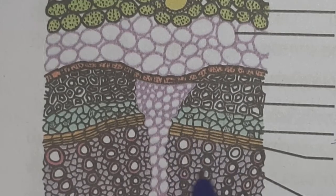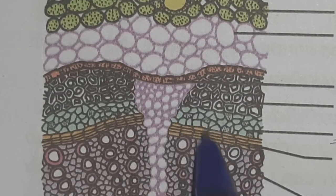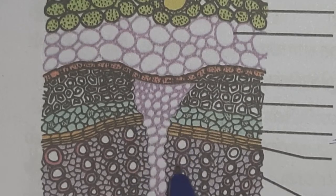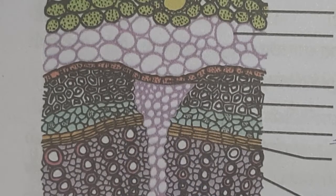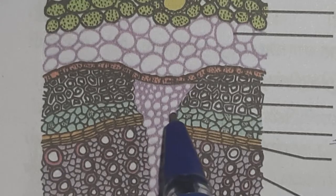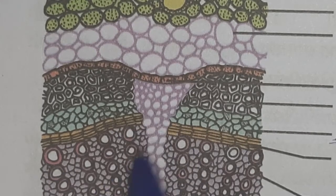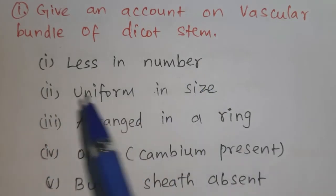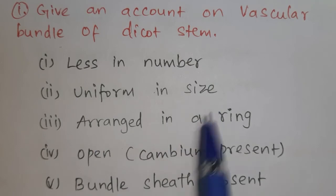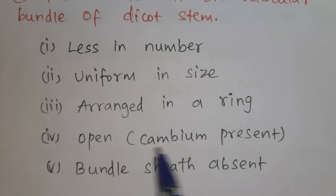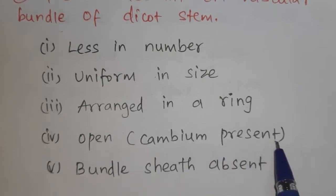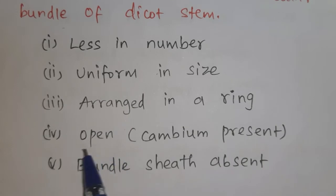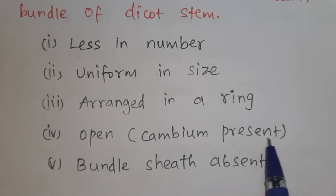Since cambium is present between xylem and phloem, the vascular bundle is open type. Around the xylem and phloem, there is no envelope, so bundle sheath is absent. To summarize: less in number, uniform in size, arranged in a ring, open (cambium present between xylem and phloem), and bundle sheath absent.